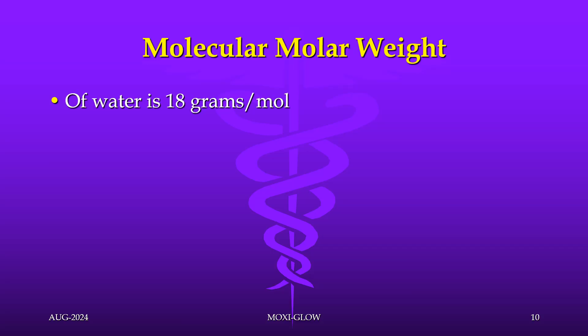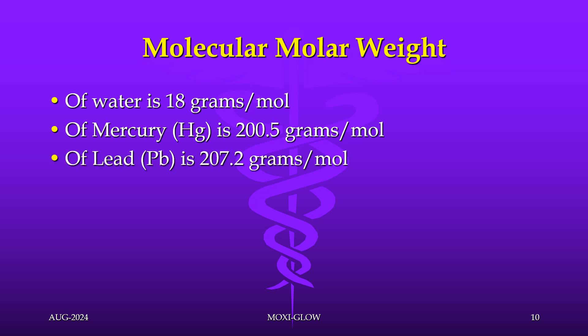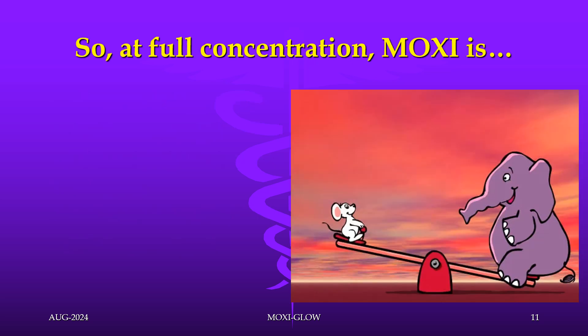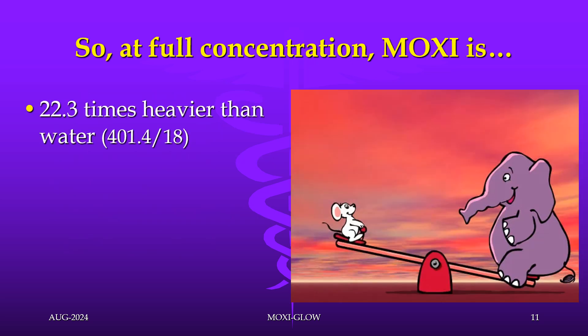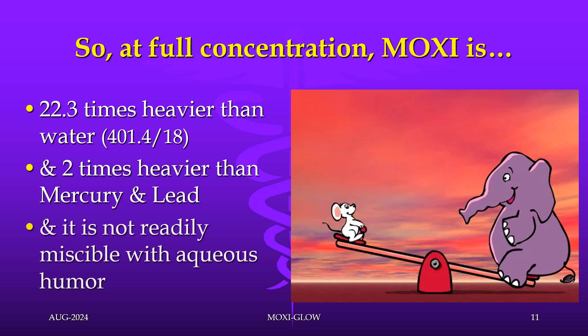The molecular weight of water is 18 grams per mol; of mercury, it is 200.5 grams per mol; of lead, it is 207 grams per mol. Whereas the molar weight of moxifloxacin is 401.4 grams per mol. So at full concentration, moxifloxacin is 22.3 times heavier than water and 2 times heavier than mercury and lead.